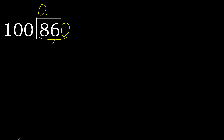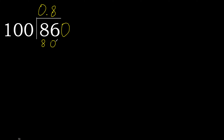860 is not less, therefore with 860 — 100 multiplied by which number is nearest to 860 but not greater? 100 multiplied by 9 is 900, which is greater. Multiplied by 8 is 800, which is not greater.